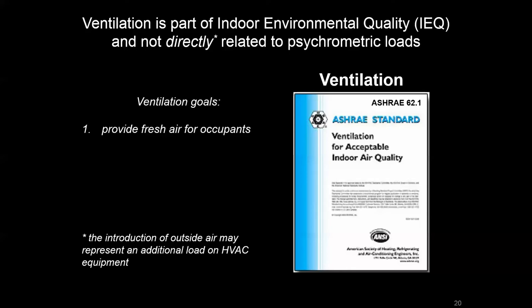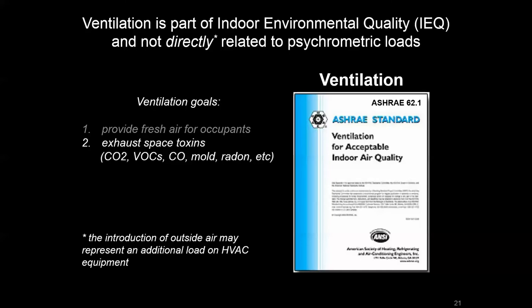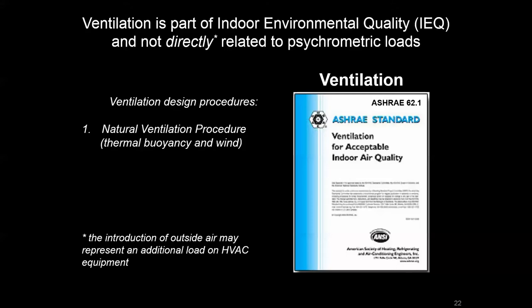The goals of ventilation are to provide fresh outdoor air to occupants and address any toxins that may be building up. ASHRAE 62.1 is the standard that predominantly helps us determine how much outside air ventilation needs to be brought in. It offers a couple of different calculation methods. The first is natural ventilation, which is rarely used because a lot needs to be known about the wind dynamics of your site, and you have to carefully design your entire envelope and architecture to support thermal buoyancy by creating heat stacks.